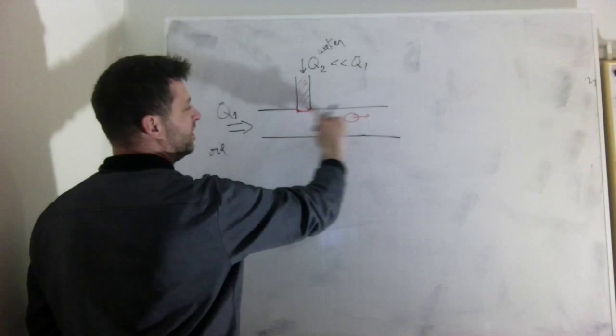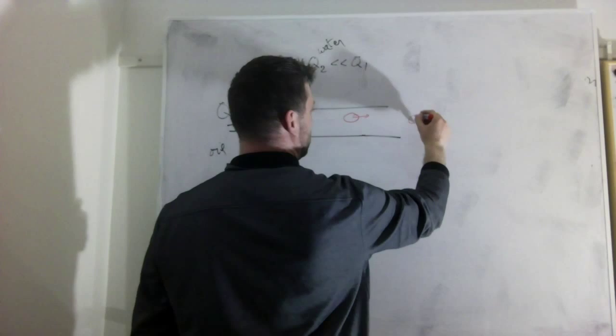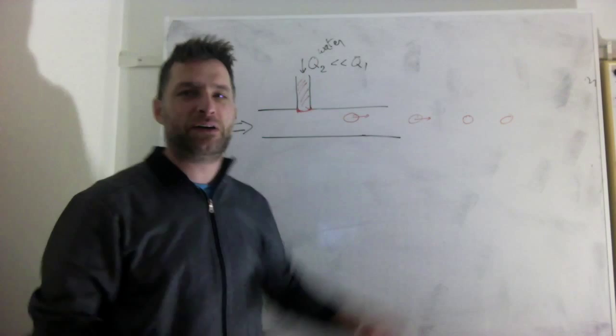And then we'll start again, grow, grow, grow, and inject the next droplet. So I'll get a train of droplets here, red droplets that are one after the other in a very repeatable manner. If I control Q1 and Q2 well, I get an extremely repeatable droplet train of watery droplets in oil.